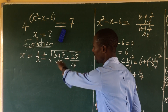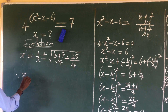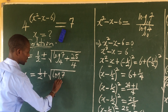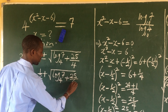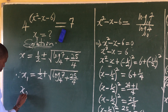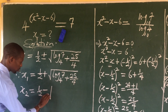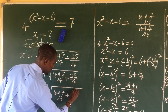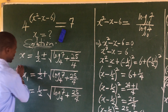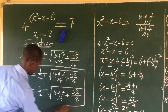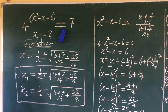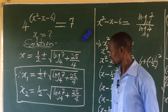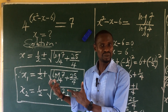Splitting the ± sign, our two solutions are: x₁ = 1/2 + √(log₄(7) + 25/4) and x₂ = 1/2 − √(log₄(7) + 25/4). These are the two possible roots satisfying the original exponential equation 4^(x² − x − 6) = 7.